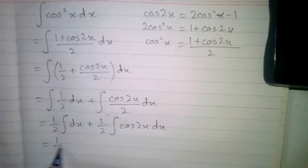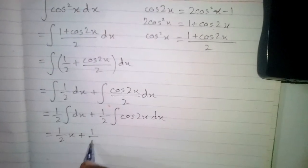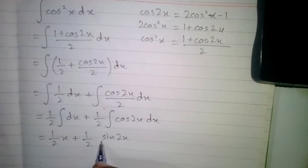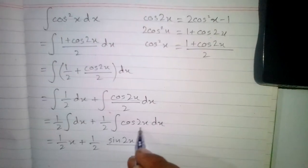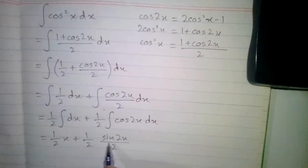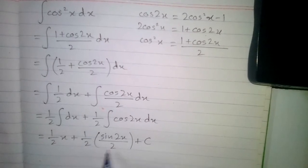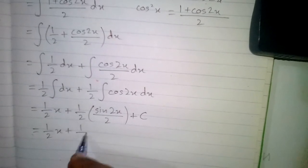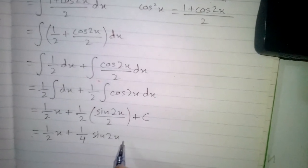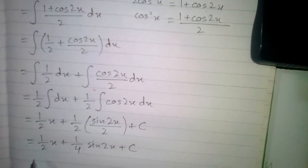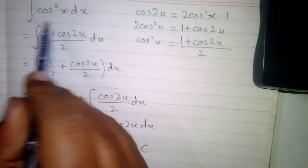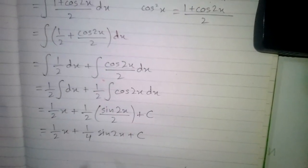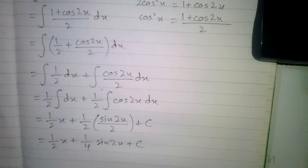We know that the integral of dx is x, so we have one half x. The integral of cos 2x is sine 2x divided by the derivative of 2x, which is 2, so that gives sine 2x upon 2. After simplification we have one half x plus one upon four sine 2x plus C, where C is the constant of integration, since this is an indefinite integral.